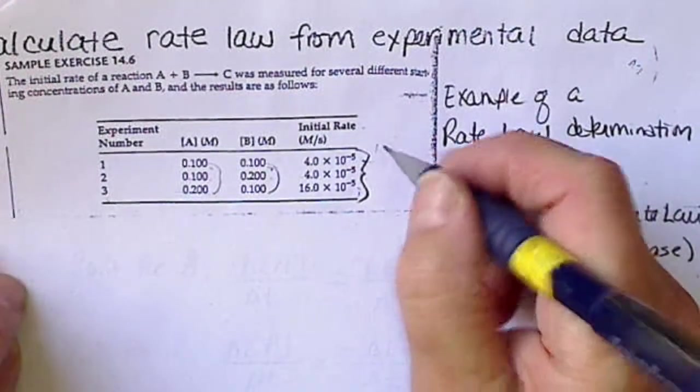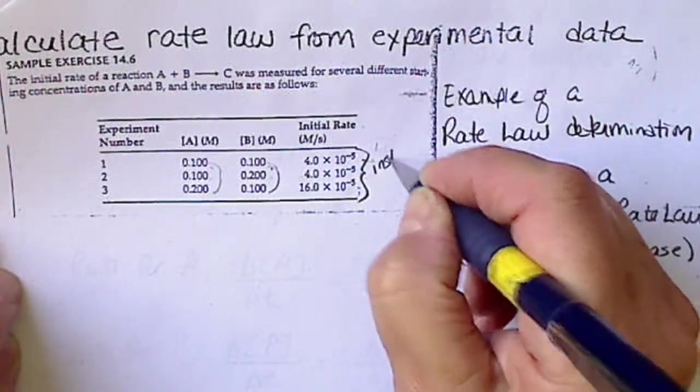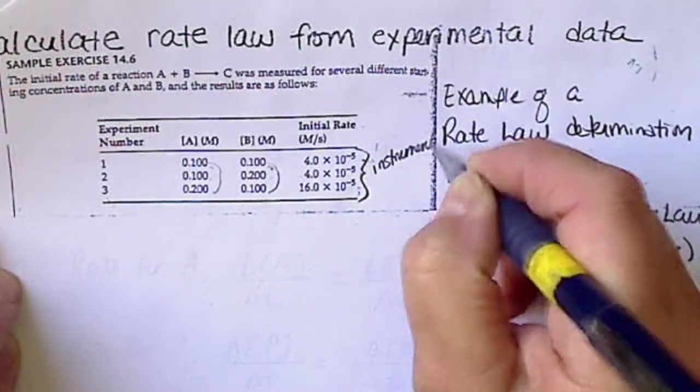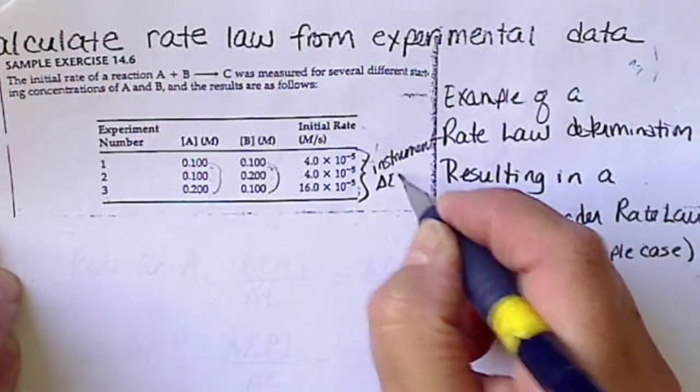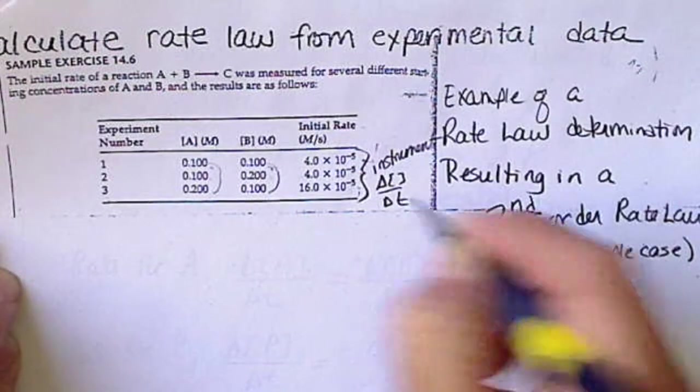So, this has to be determined from an instrument, and the rate is always delta concentration over delta T.